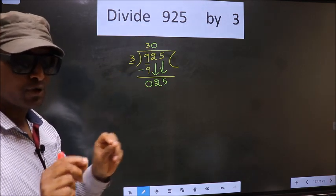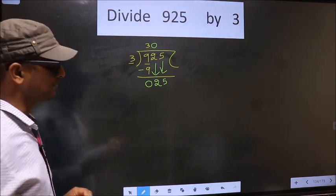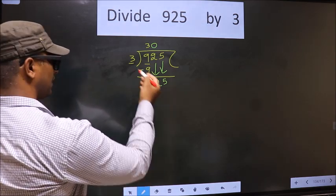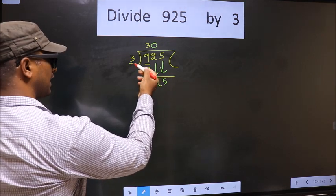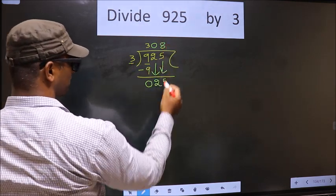Next, here we have 25, here 3. A number close to 25 in the 3 table is 3 times 8, which is 24.